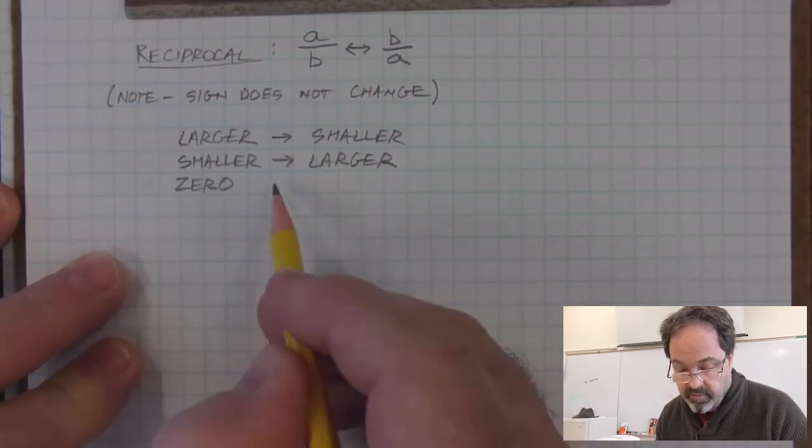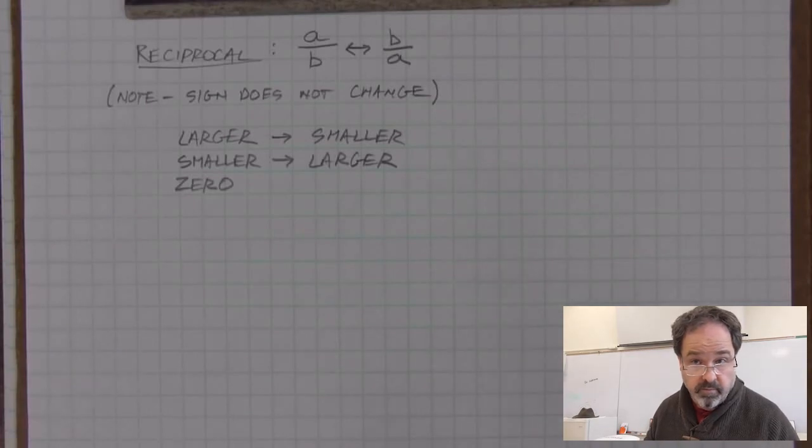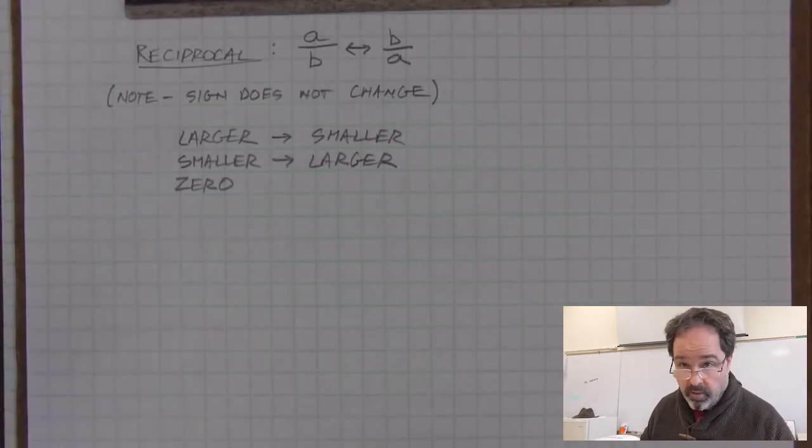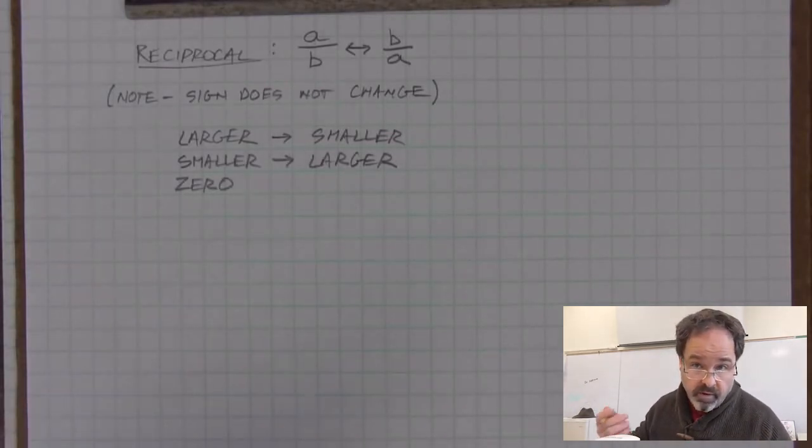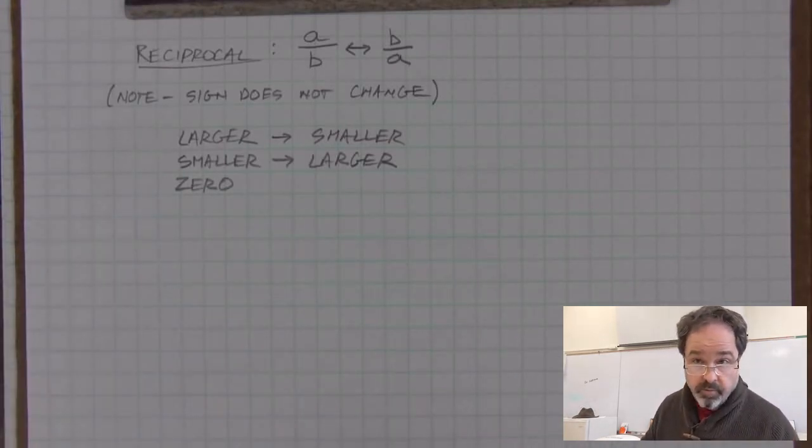When you have a zero as a value, and you attempt to take the reciprocal, you will have an undefined number. You can't take the reciprocal of zero. You can think of zero as the fraction zero over one, and the reciprocal of that is one over zero, which is not defined. So zero doesn't have a reciprocal.